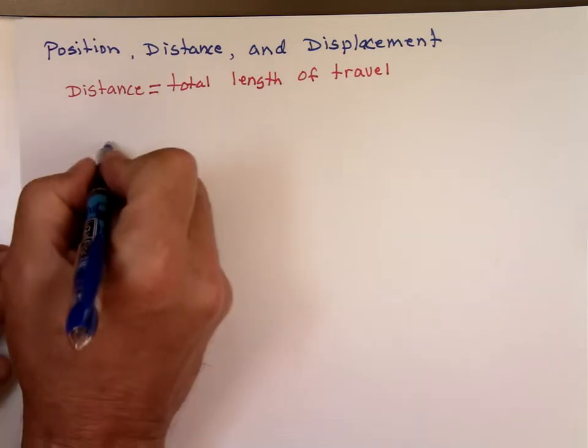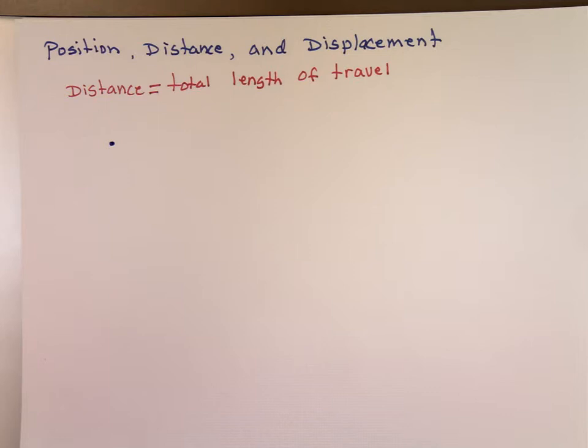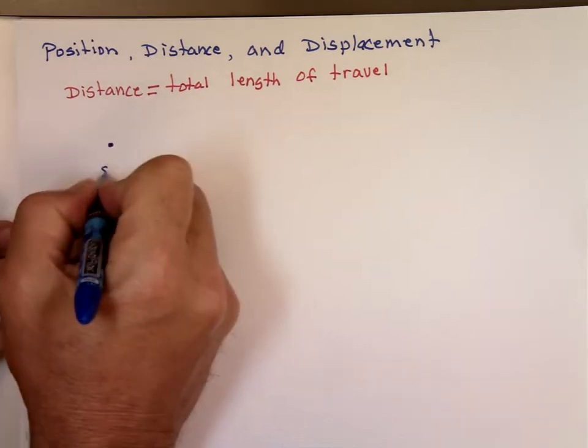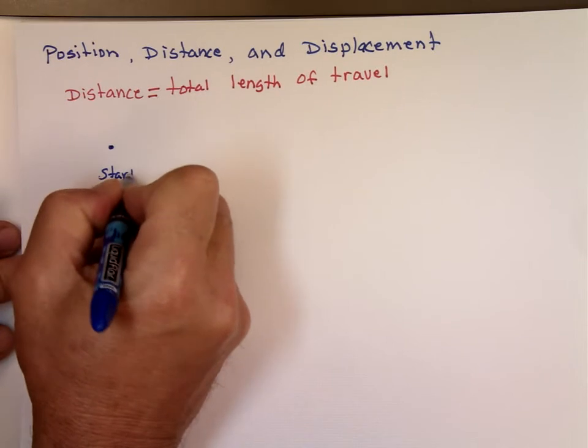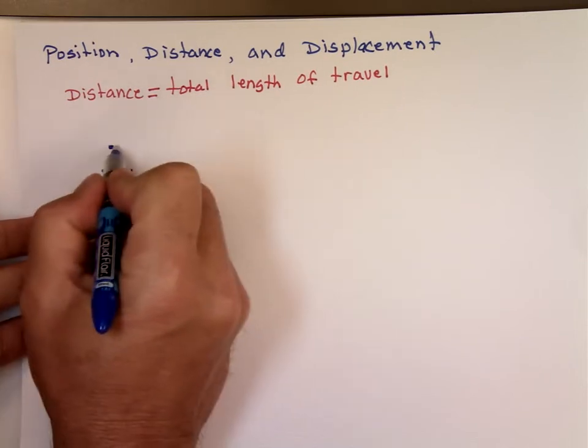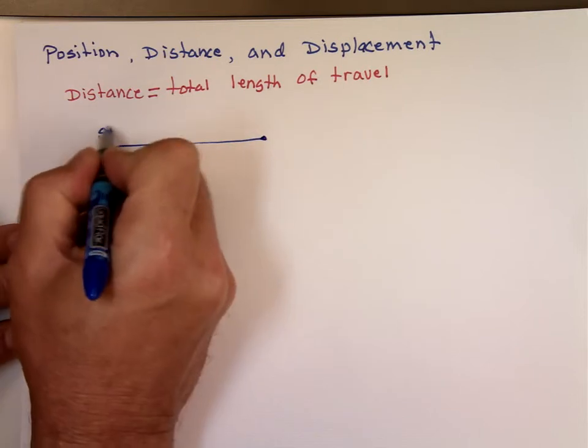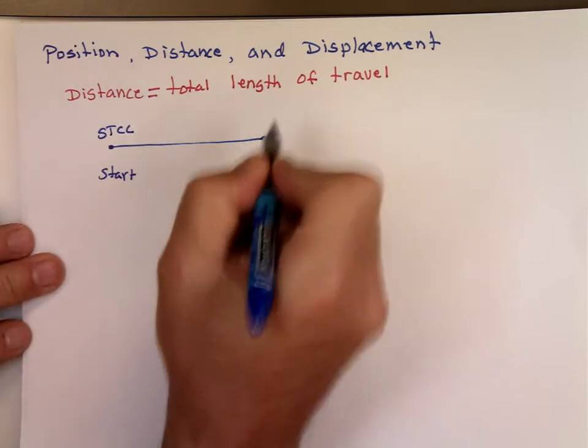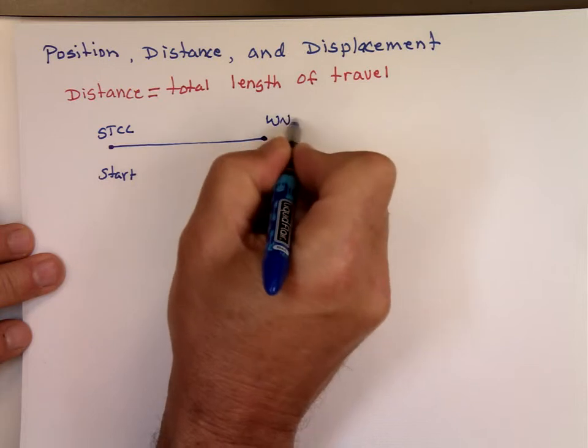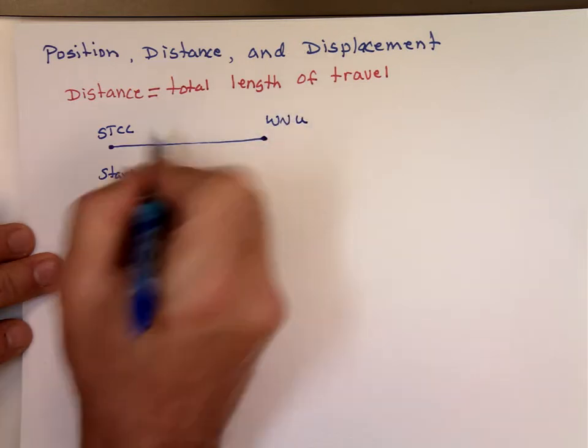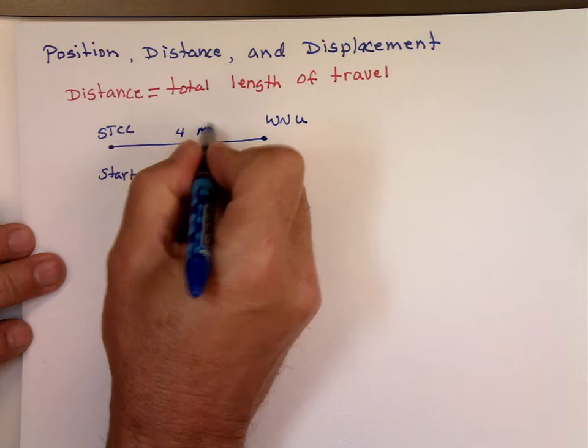If you start from here, if you start from here and you traveled from STCC to Western England University, WinneU, which is about four miles, maybe not even four miles from here.